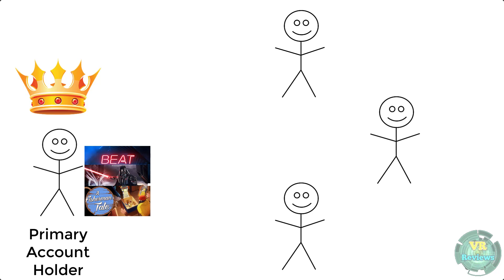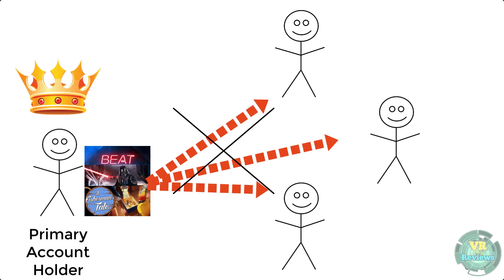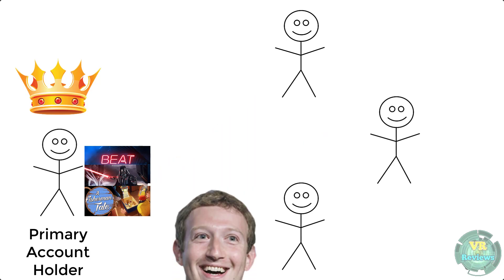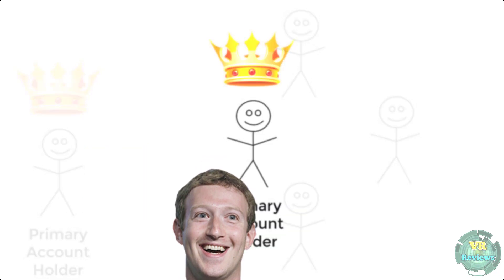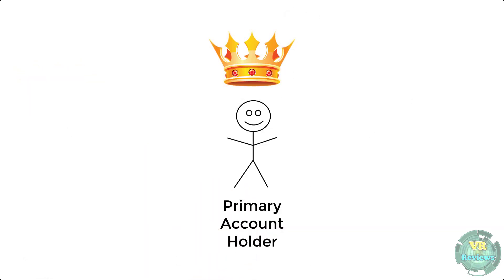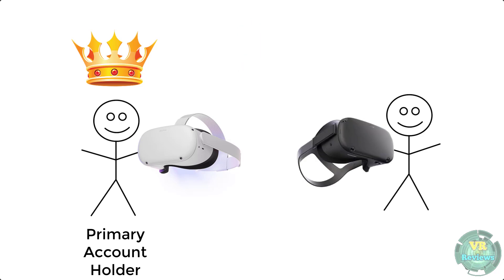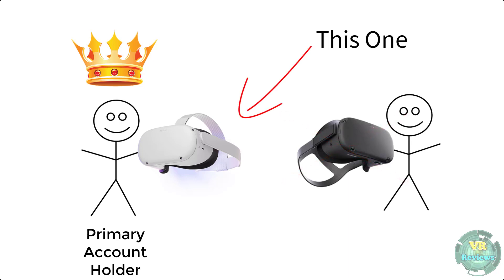There are some drawbacks: if the primary account holder disables app sharing or their account gets banned, you lose access to those shared games — so make sure you can really trust the primary account holder before buying games through their account. App sharing is also restricted to only one device, meaning a secondary account holder who gets their own headset cannot access the primary account holder's apps on that new headset.